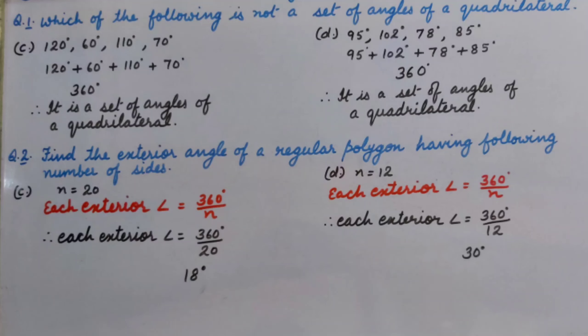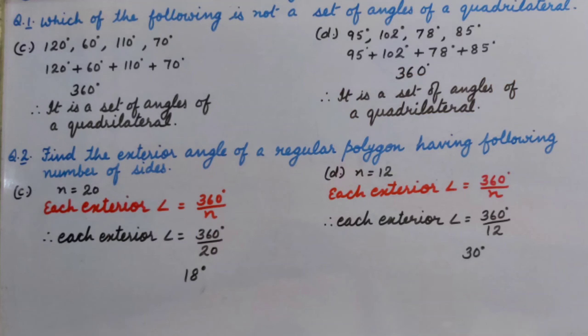Similarly, Part D: the sum of all the given angles is 360 degrees. So this is also a set of angles of a quadrilateral.